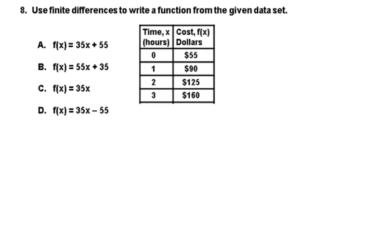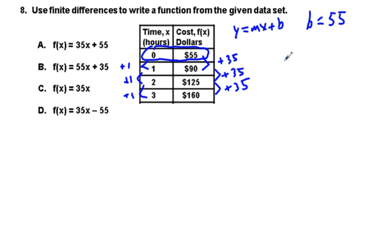Eight, use finite differences to write a function from the given data set. Already, you know when time x is 0, you have your y-intercept. If you have y equals mx plus b, slope-intercept form, you know that b, where x equals 0, is going to be $55. So A is looking good. Your finite differences, you're going up on the left 1 every time, and on the right you're going up 35. M equals 35, so you have y equals 35x plus 55. Answer choice A.